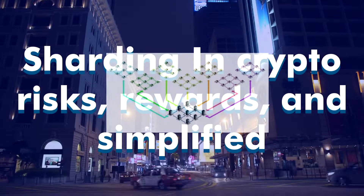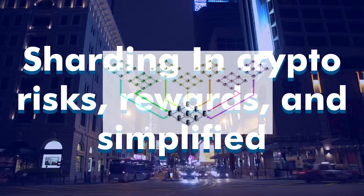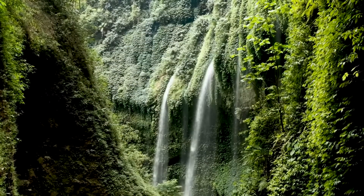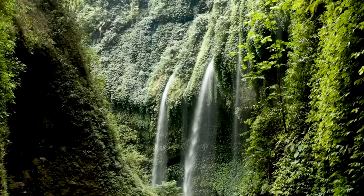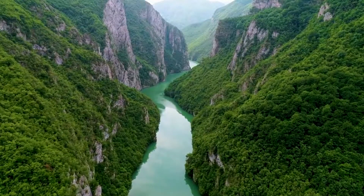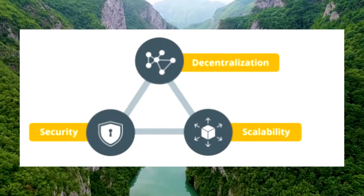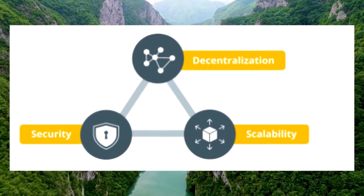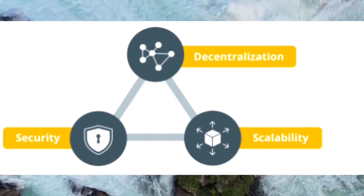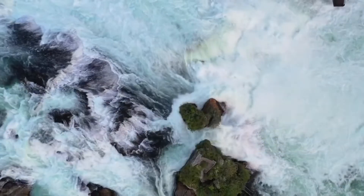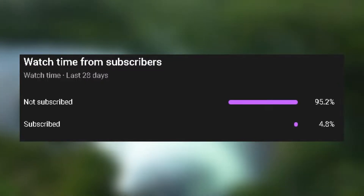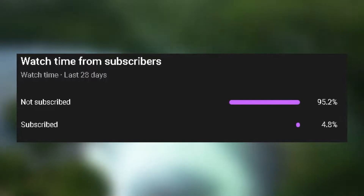Sharding is a method to solve scalability issues. It's a technique that allows dividing a database into a series of smaller databases, or shards, with the goal of solving different problems that plague blockchains today. The blockchain trilemma, which we discussed in the last video, involves the scalability, decentralization, and security of a blockchain. We will explore how sharding addresses that in this video.